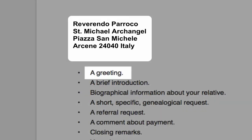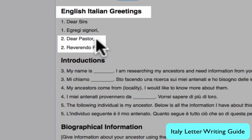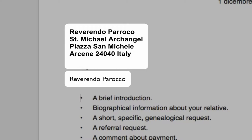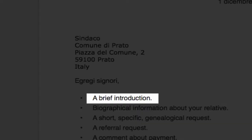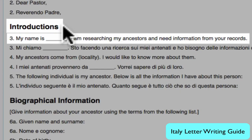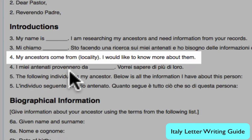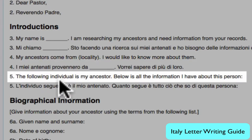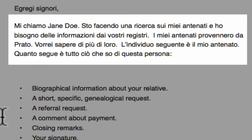Next, we are looking for the greeting — this is the greeting you use for writing to a church. Next, we will write a brief introduction: you are introducing yourself and your interest in genealogy, that your ancestors came from that town, and that you're now going to give information about the person you're looking for. There is our introduction.